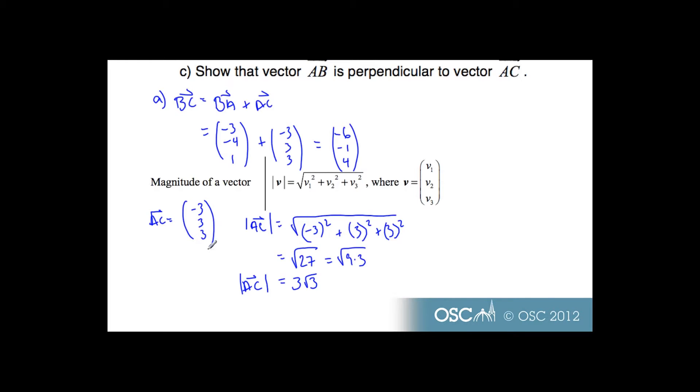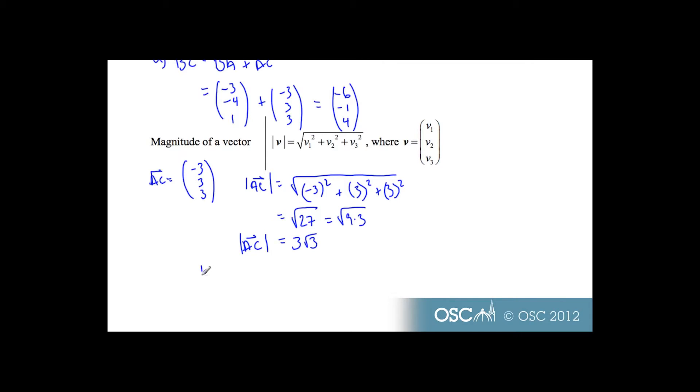And if I wanted to have a length of 1, I'm going to take this vector and divide it by its length, or in other words, multiply it by the reciprocal of its length. This is dividing by the length of this vector, and this will be a unit vector. If I multiply it in, I end up with (-3/(3√3), 3/(3√3), 3/(3√3)).